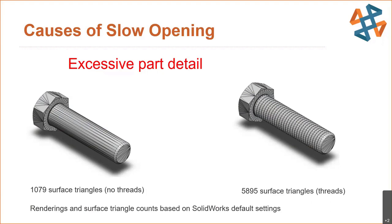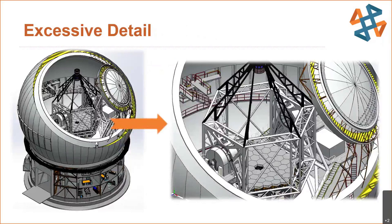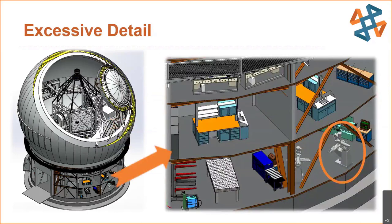I always suggest using simplified fasteners and applying a cosmetic thread instead. Other areas where you might see excessive detail — in this example, we're looking at a giant multi-story telescope. You may not need all those components fully resolved or with very high detail settings. Depending on the situation you're trying to use the file for, detail like modeled bridge ports may be more than needed — but we can show techniques to keep that detail while still maintaining good performance.